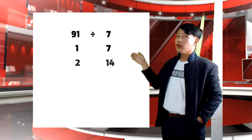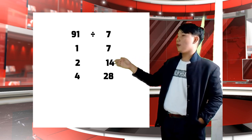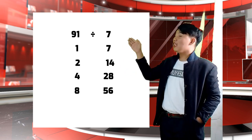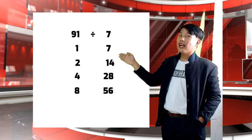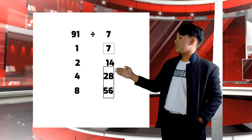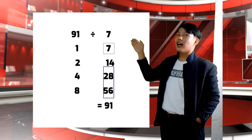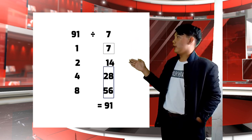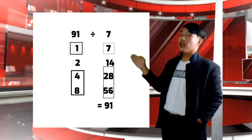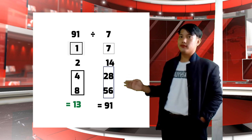So if we double 1, it becomes 2; double 7 becomes 14; double 2 becomes 4; double 14 becomes 28; double 4 becomes 8; double 28 becomes 56. The dividend values are on the left side. Adding 56, 28, and 7 gives us 91 — the value of our dividend. We then get the sum of their corresponding numbers: for 7 there is 1, for 28 there is 4, and for 56 there is 8. The sum of 8, 4, and 1 is 13. Therefore, 13 is the quotient of 91 divided by 7.